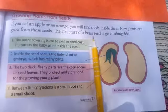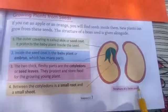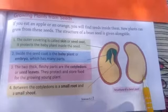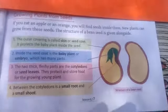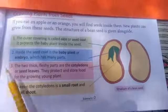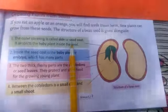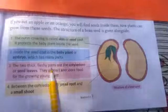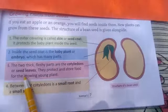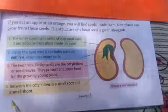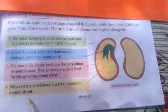The structure of a bean seed is given alongside. We will now focus on each part of this bean seed. First, we will focus on the seed coat; second, we will study about the baby plant; third, we will study about seed leaves; and last, we will study about the small root and small shoot.